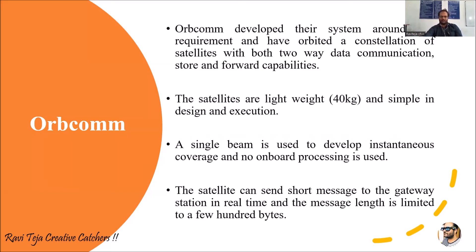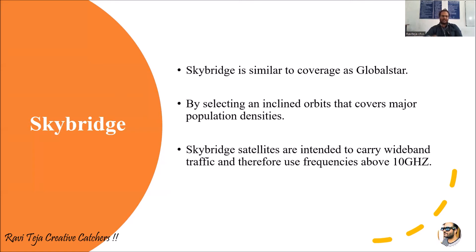Next, Skybridge is somewhat similar to GlobalStar with respect to coverage. Skybridge has orbital inclination, allowing it to cover major parts of the world — major population density areas — providing services for larger parts of the globe. Skybridge satellites are intended to carry wideband traffic and therefore use frequencies above 10 GHz, enabling huge data transfer over large areas of the earth.